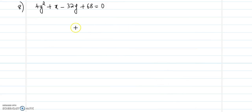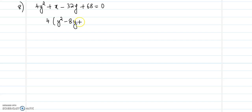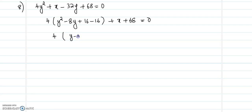Question number 8: we need to graph this conic section, classify it, and find the vertex, focus, and directrix. We will complete the square for y: 4(y squared minus 8y). We must add 16 and subtract 16, then we have x plus 68 equal to 0.